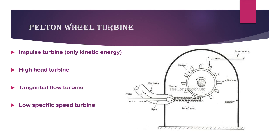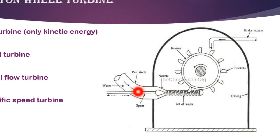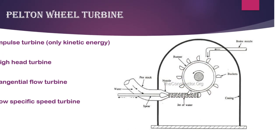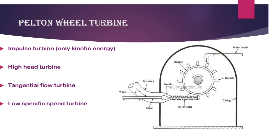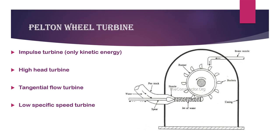To classify the Pelton wheel turbine: based on inlet type, it is an impulse turbine — it uses kinetic energy from water velocity. It is a high-head turbine. Based on flow direction, it is a tangential flow turbine — the water jet hits the runner tangentially. It has low specific speed because head H is high, so ns (which is proportional to root of P over H) is low.